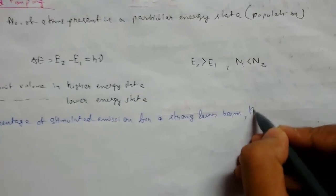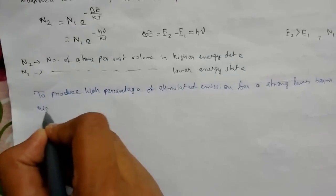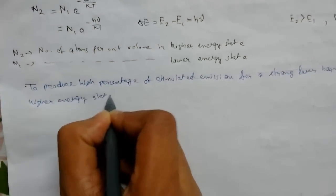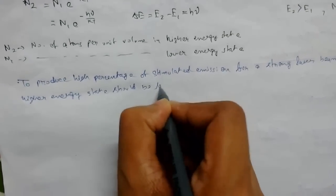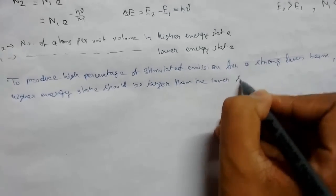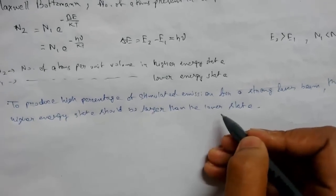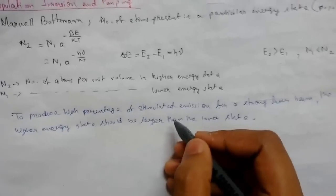The number of atoms in the higher energy state should be larger than in the lower state. This is the main reason for population inversion—to achieve a greater number of atoms in the higher state.